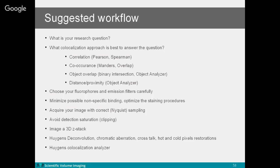Here is a suggested workflow for the whole co-localization experiment and analysis. First, define your research question — this applies to all experiments. Then choose the co-localization approach that best answers your question: correlation, co-occurrence, overlap, or distance. You can also use the object analyzer for object-based co-localization. Choose your fluorophores or emission filters to avoid crosstalk. Minimize non-specific binding and optimize your staining procedure. When imaging, acquire with correct sampling — resolution of your image is important.